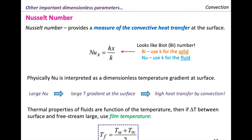Most fluid mechanics books contain a big table that summarizes the most important dimensionless numbers. It is important to recall that a dimensionless number is not only a quantity that doesn't have dimensions — it's a number that helps us compare different phenomena happening in one process, so we can decide which phenomenon is overcoming the other. The Nusselt number becomes very important in convection because it provides us a measure of the convective heat transfer at the surface.